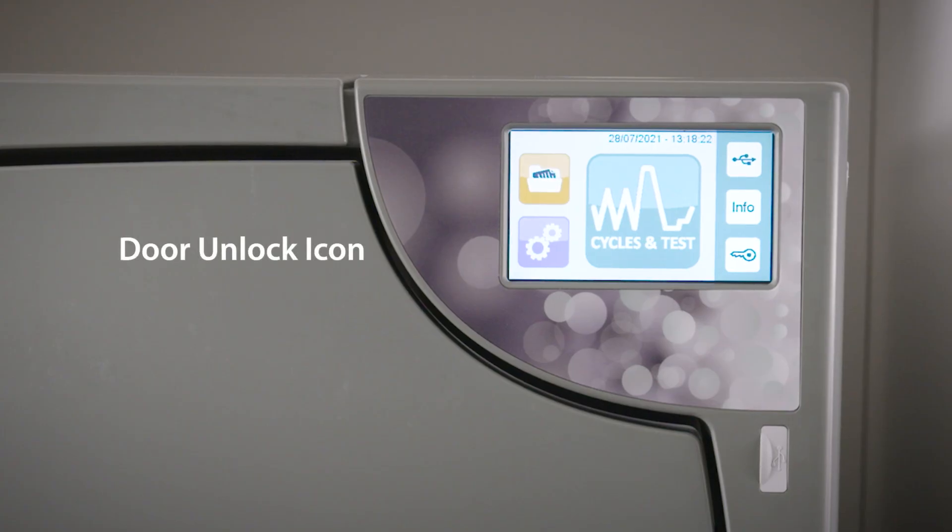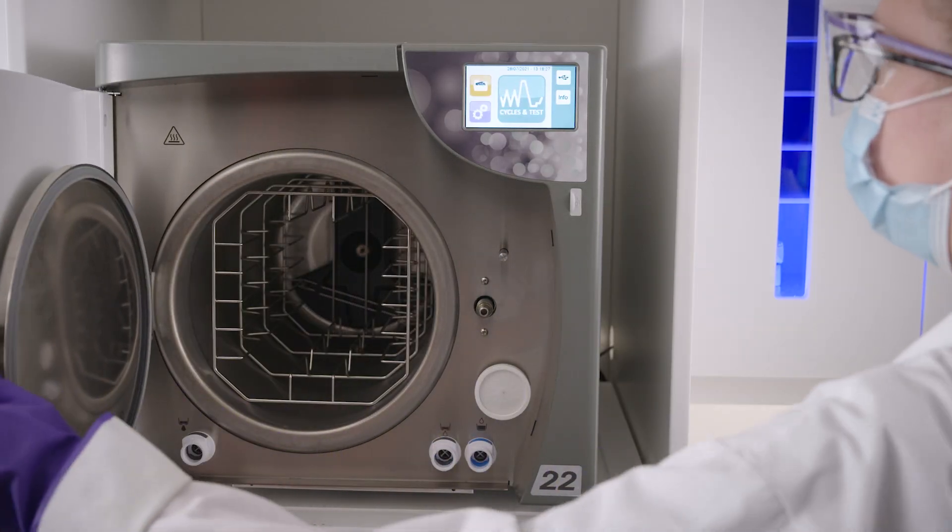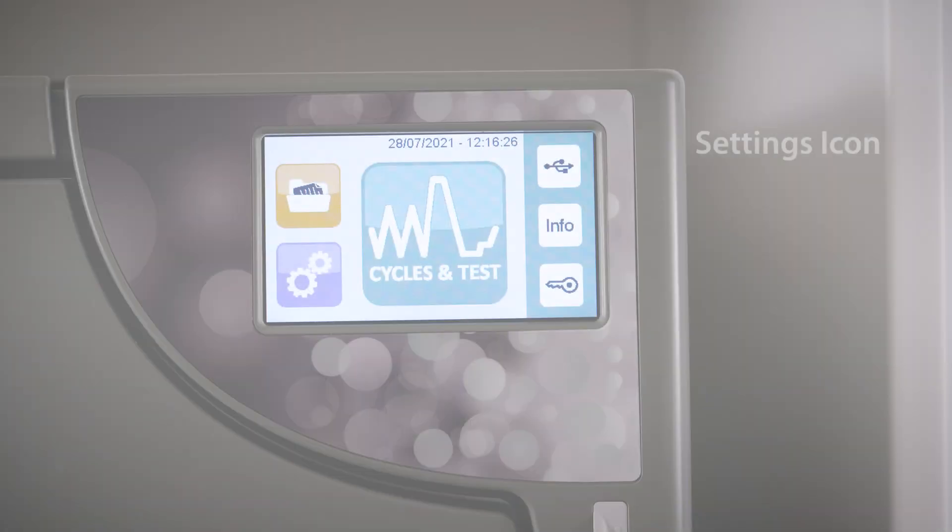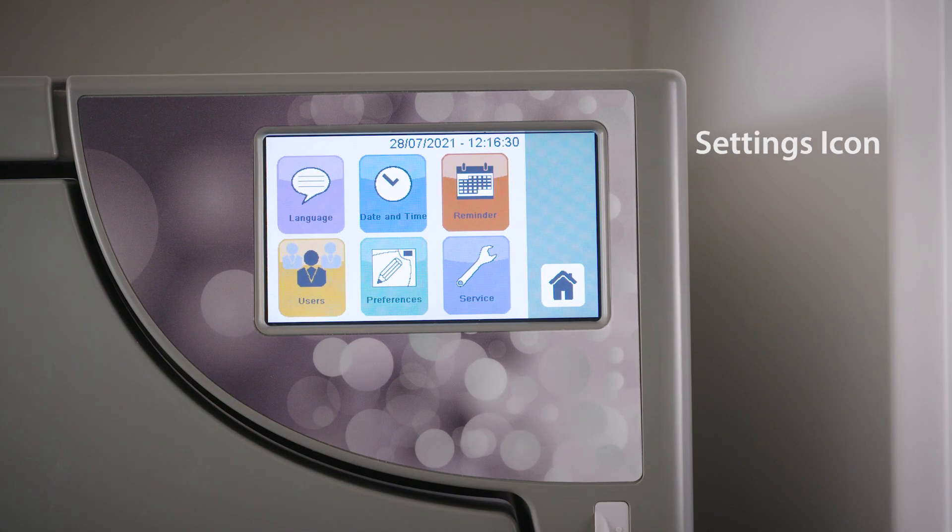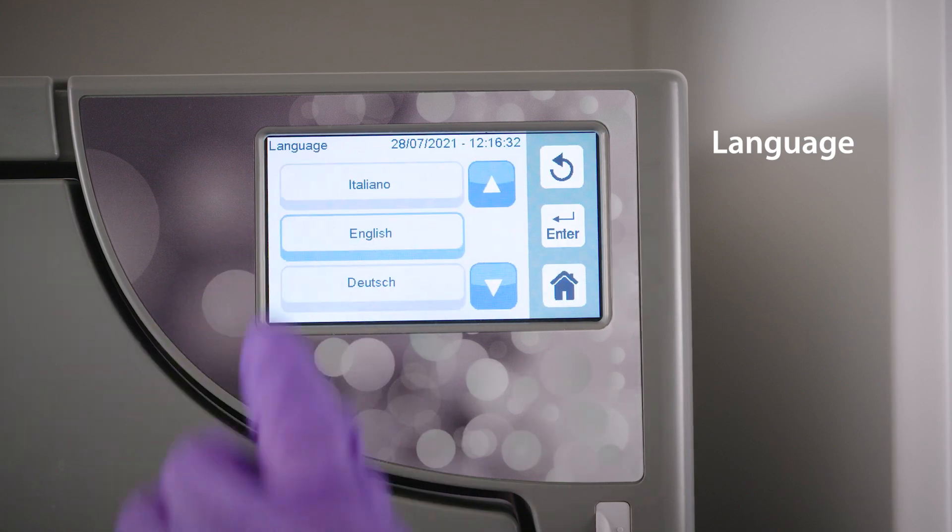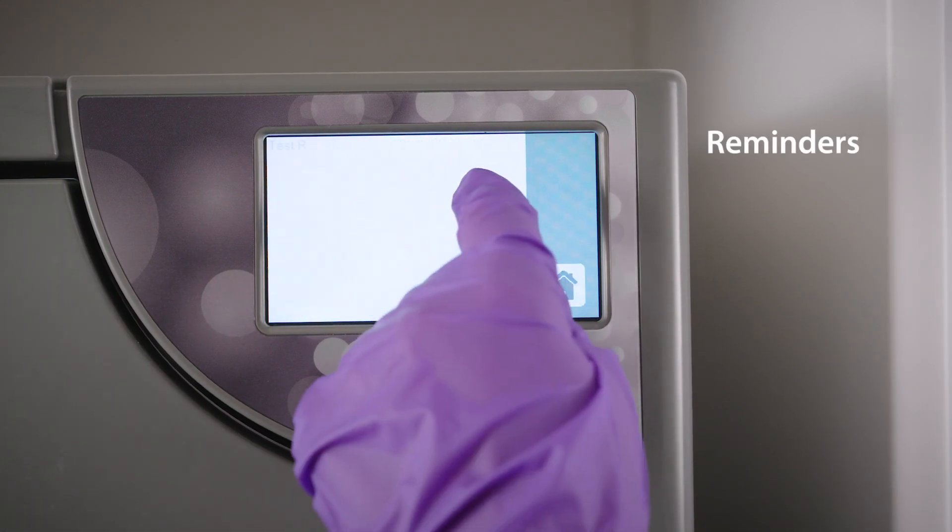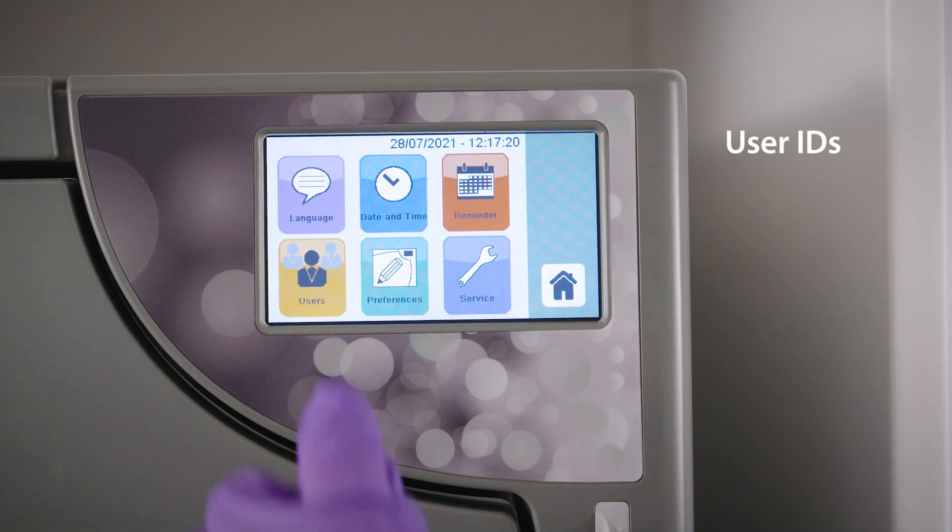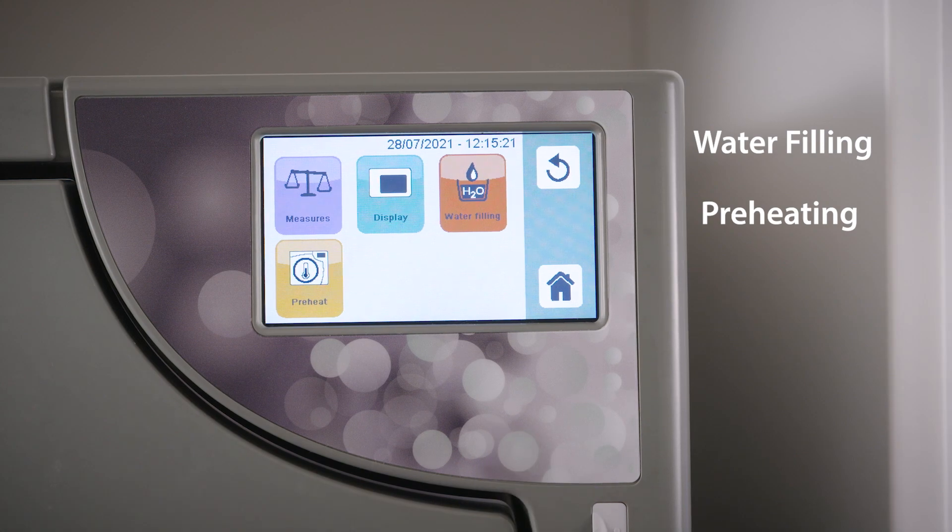The Door Unlock icon indicates if your door is locked or unlocked. Lastly, the Settings icon allows you to adjust the user settings. Features such as language, date and time, automatic reminders, user IDs, water filling settings, and preheating options are explained in detail in your operator's manual.